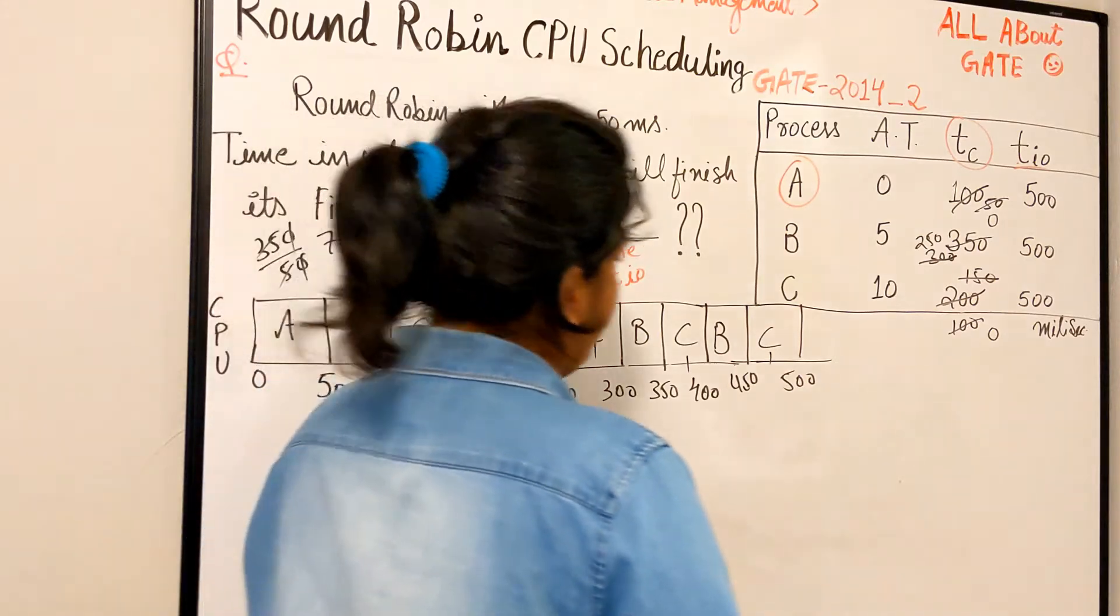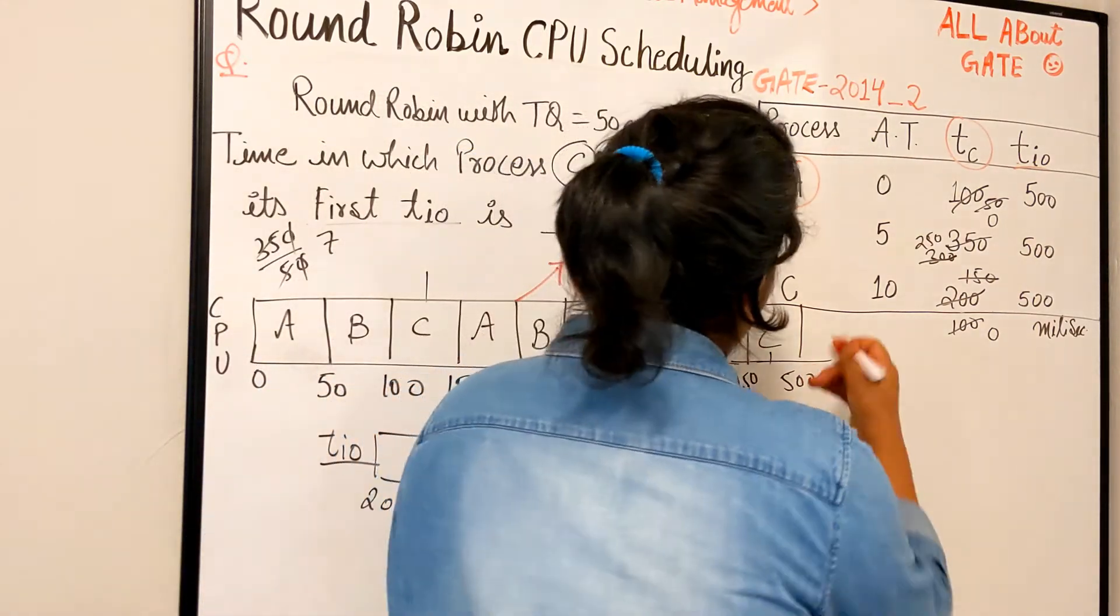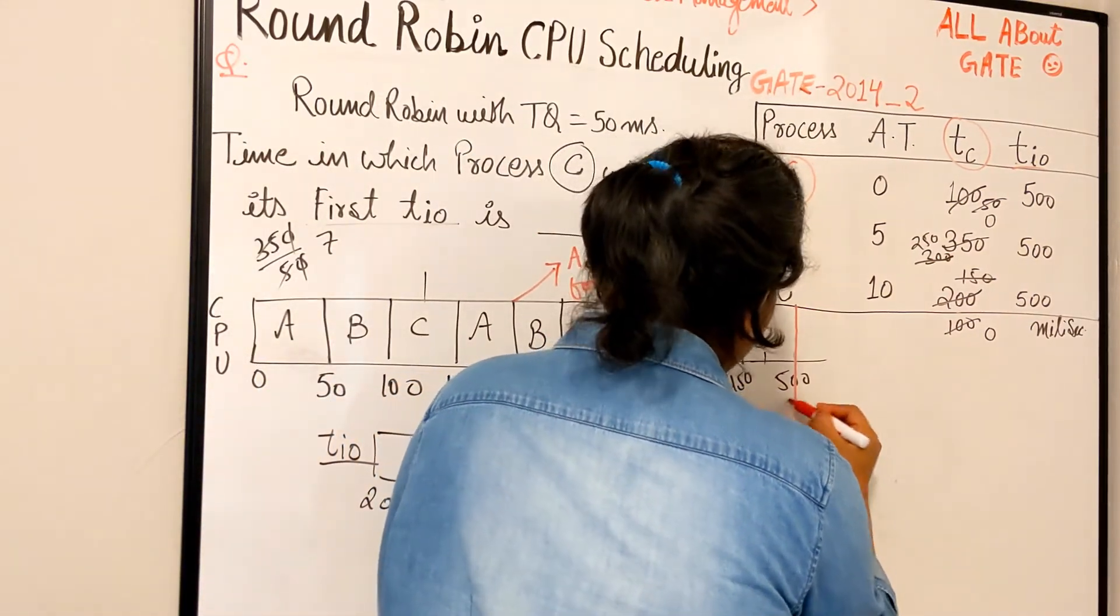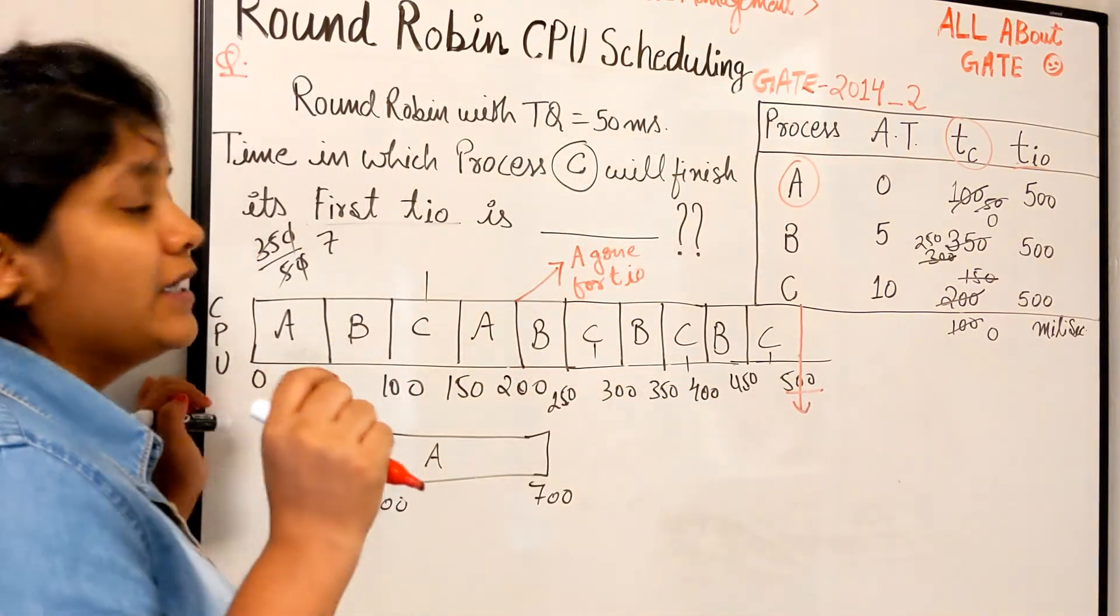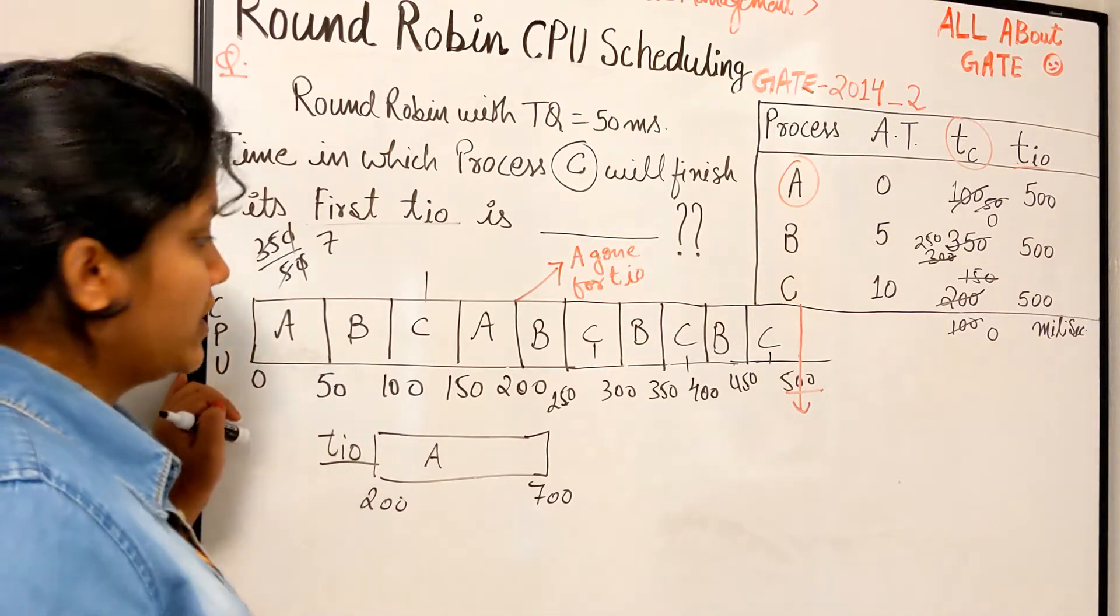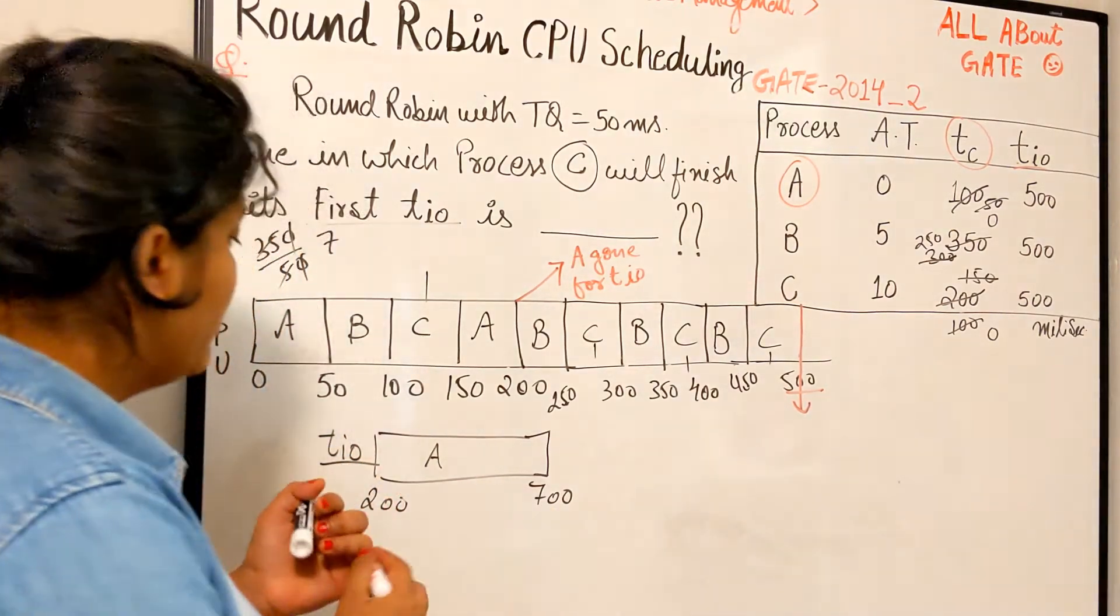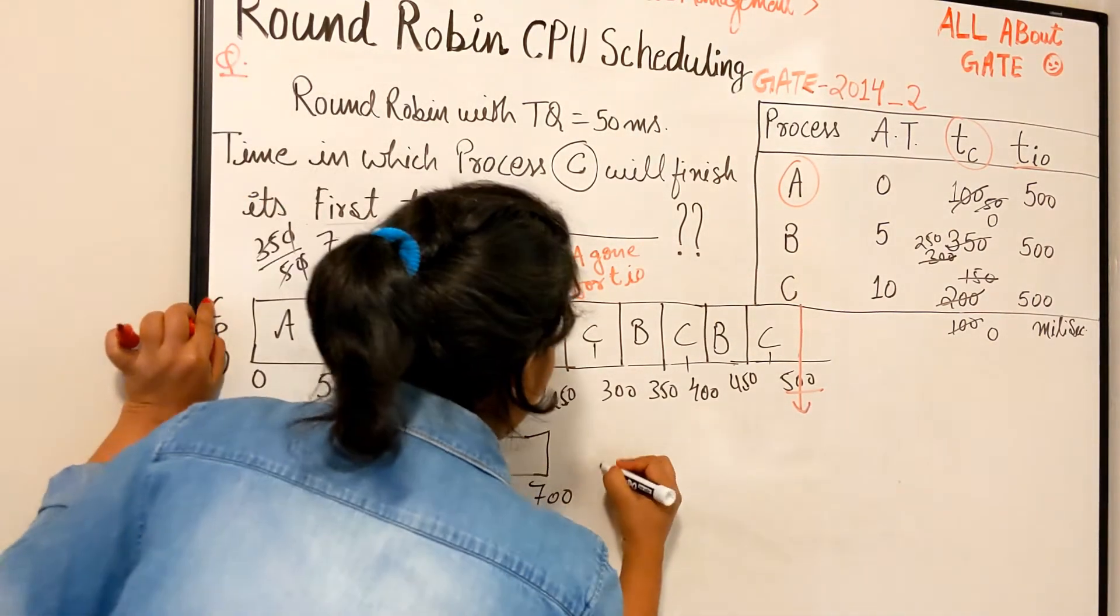I'm not writing the value again and again because space is less and the values are big, so it is going to consume everything. But you can understand, right? So now at this point of time, you see, at this point of time when it is time at 500, C has finished its first TC, first computation.